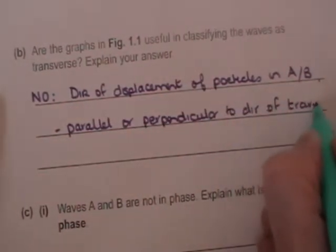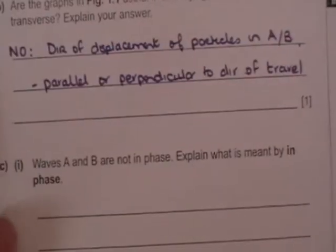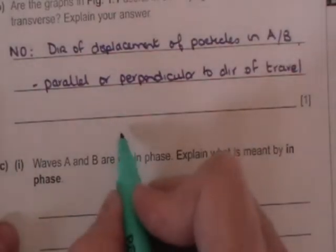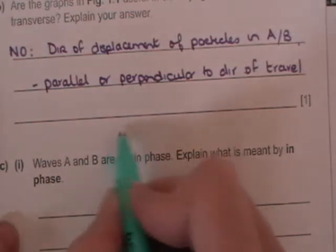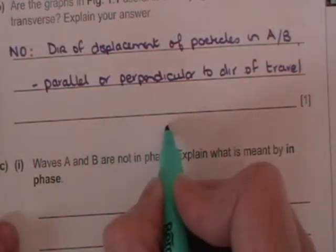So we can't tell that from the graph. All we can tell is about their displacement. And of course particles in a longitudinal wave could be displaced by different amounts in either direction like that.